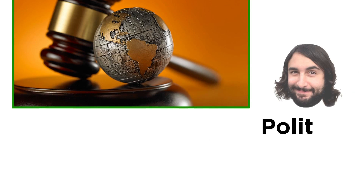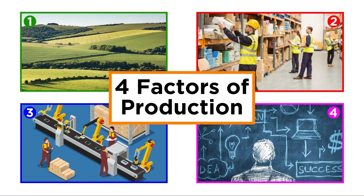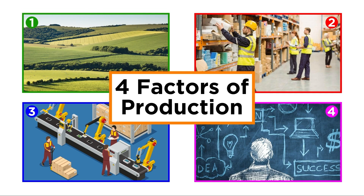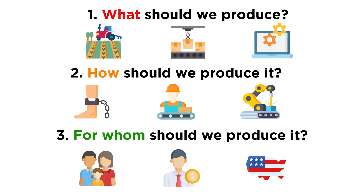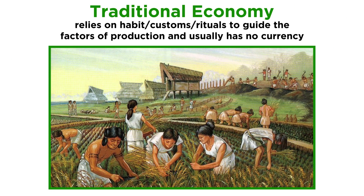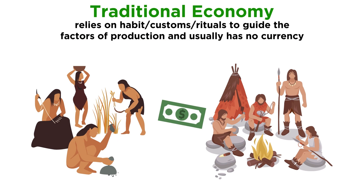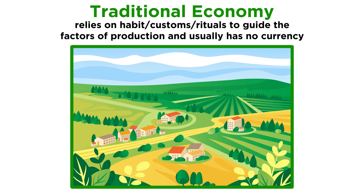Instead, for our purposes, when looking at factors of production, there are four distinct economic systems, and all of them have to answer the three economic questions mentioned earlier. The oldest economic system in history is a traditional economy. It relies on habit, custom, or ritual to guide the factors of production. It's informal, revolves around the family unit or tribe, and there's usually no currency. There is little room for innovation or change, and traditional economies are usually found in communities that tend to stay relatively small, close, and isolated from the rest of the world.